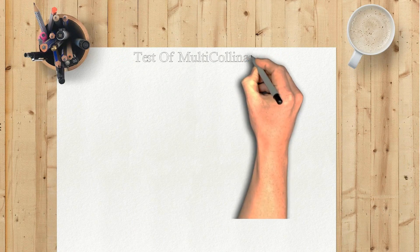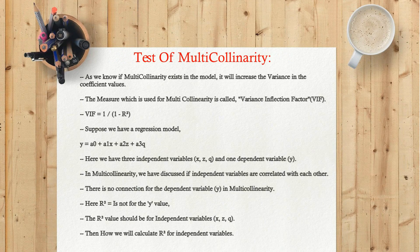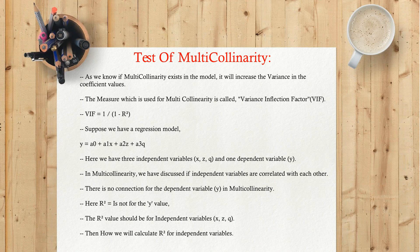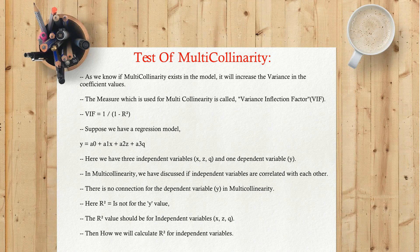Test of multicollinearity: as we know, if multicollinearity exists in the model it will increase the variance in the coefficient values. The measure used to detect multicollinearity is called the Variance Inflation Factor, or VIF. The formula is: VIF equals 1 divided by (1 minus R-squared).